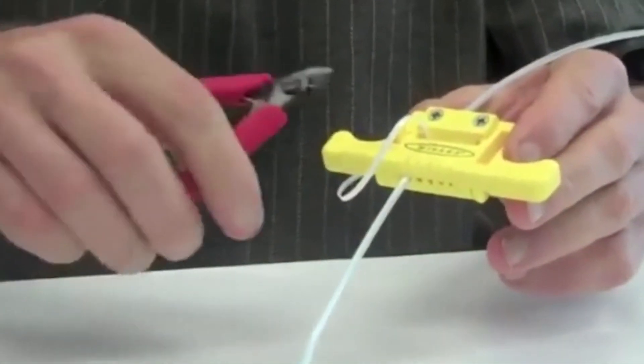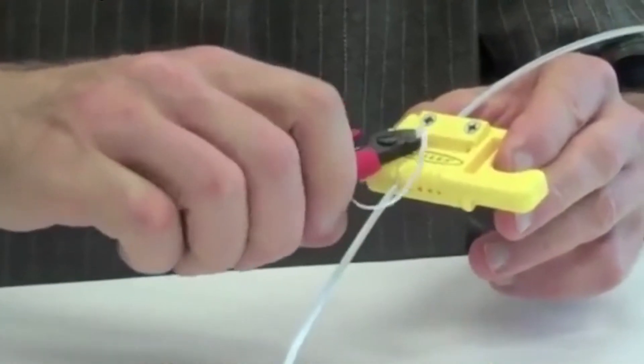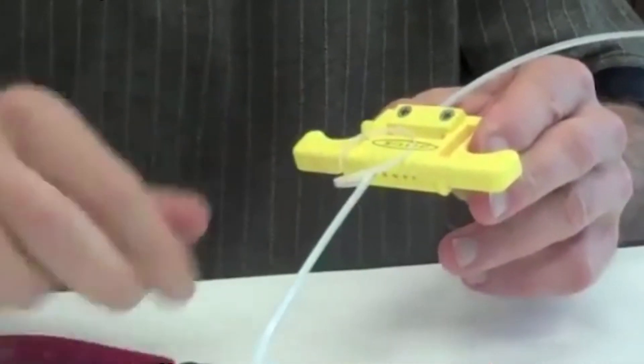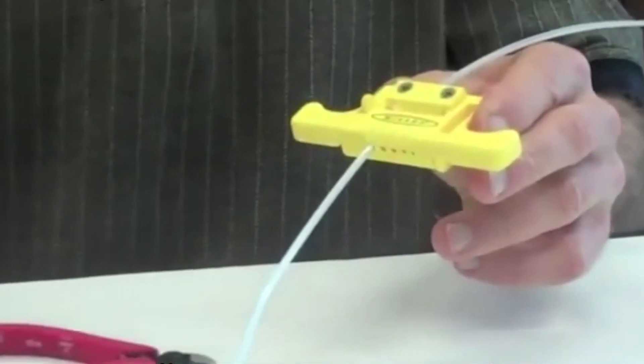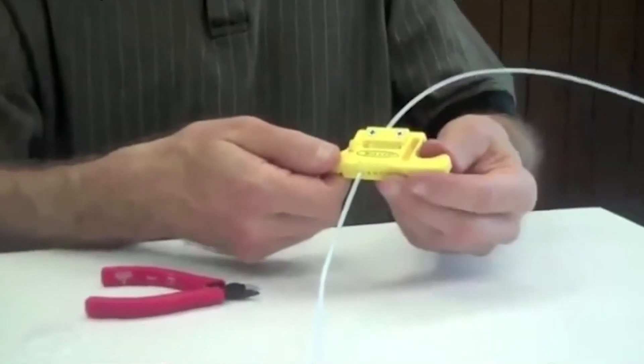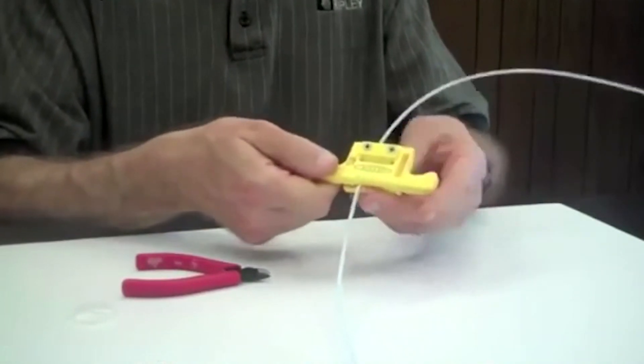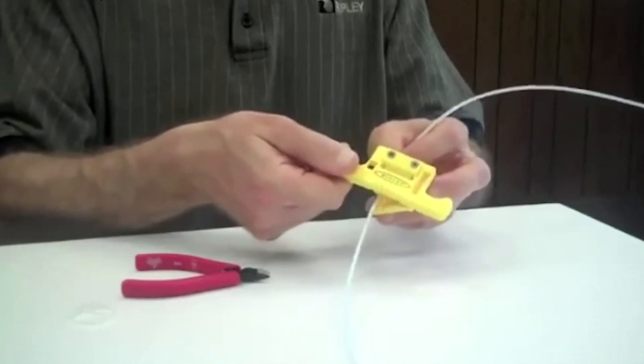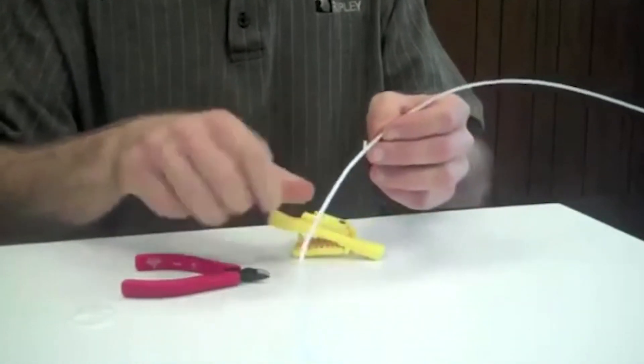Once the desired stripping length has been achieved, snip the shaved buffer tube from the stripping channel utilizing the Miller 9150 diagonal cutter. Open the tool by pushing the protruding locking tab from left to right, completing the stripping process.